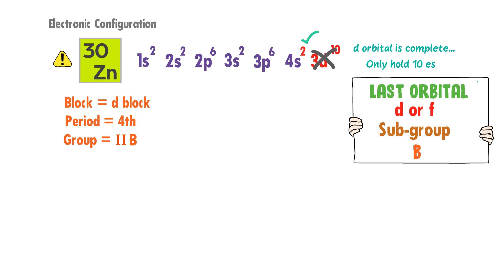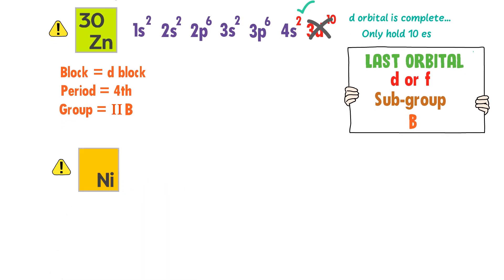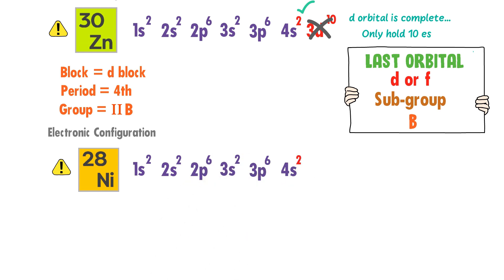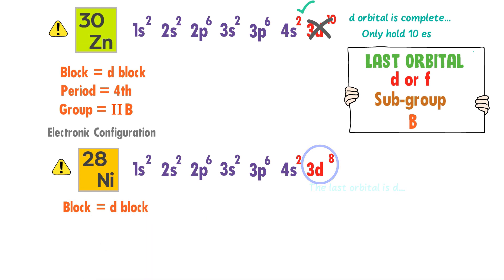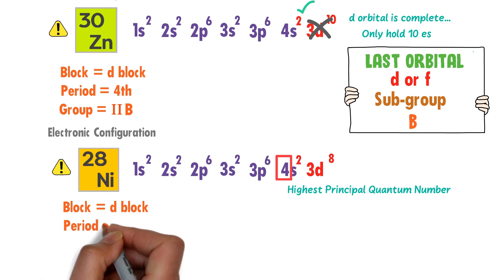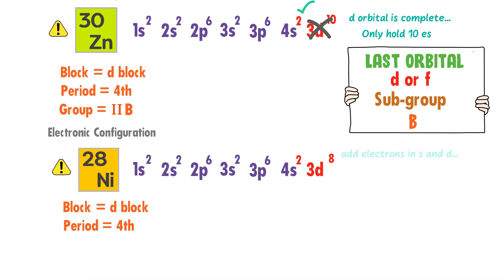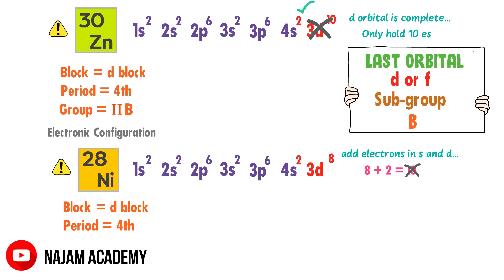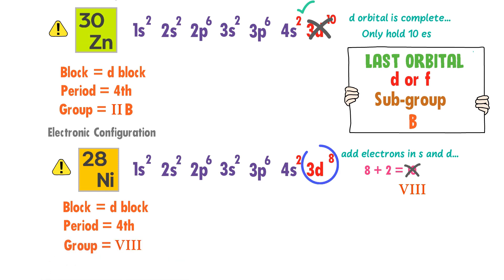Another special case is nickel — its atomic number is 28. The electronic configuration of nickel is 1s2, 2s2, 2p6, 3s2, 3p6, 4s2 and 3d8. The last electrons of nickel are in the D orbital, so it is a D block element. The highest principal quantum number of nickel is 4, so the period of nickel is 4th. To find the group number, we add the electrons in D and S orbitals: 8 plus 2 is equal to 10. We know that there is no tenth group in the periodic table according to Roman numerals, so whenever you get a number greater than 8 after adding electrons, its group will always be 8. Thus the group number of nickel is 8. The last orbital of nickel is D, so its subgroup is B. Thus nickel is present in the 8th B group.